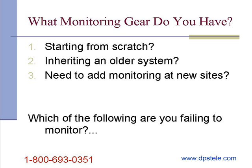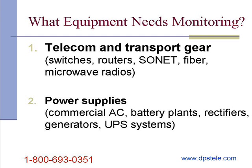What important things am I not monitoring? Some key things that you should be monitoring include telecom and transport gear — that includes switches, routers, SONET, fiber, microwave radios, that sort of thing. Your power supplies are obviously very important. You can't do anything if your sites go dark, so that includes commercial AC power, but also your battery backup plants, your rectifiers, generators, and UPS systems.